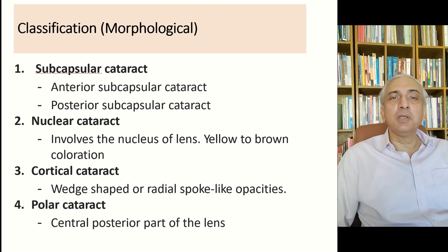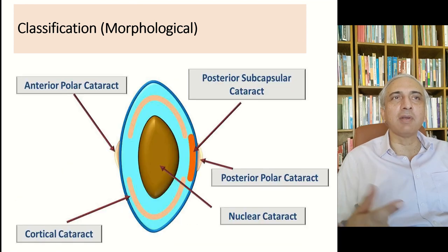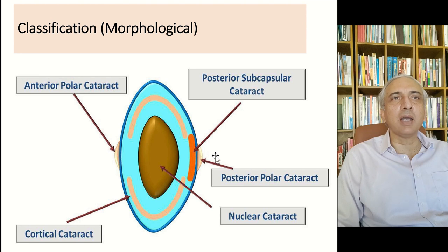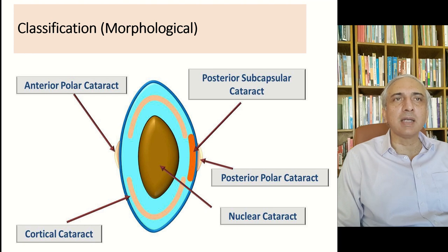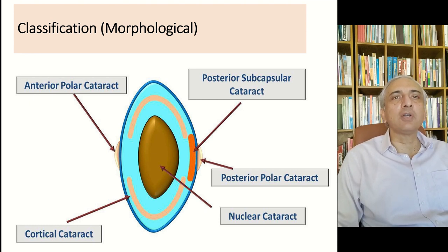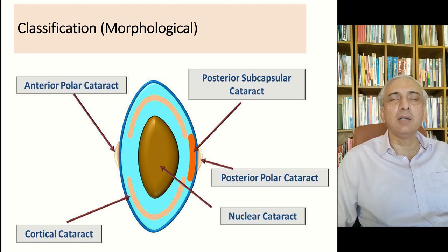Classification can also be based on morphology. The four types are: posterior subcapsular cataract, nuclear cataract, cortical cataract, and polar cataract. The anterior polar cataract is at the level of the capsule and can be anterior or posterior. The three most important are nuclear sclerosis, cortical cataract, and posterior subcapsular, with polar cataract as the fourth. Knowing morphology is important because different surgical strategies and complications are associated with different types.